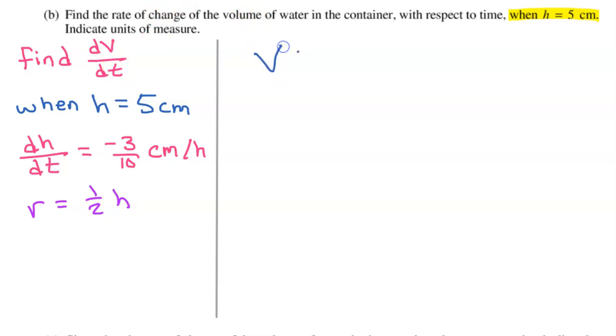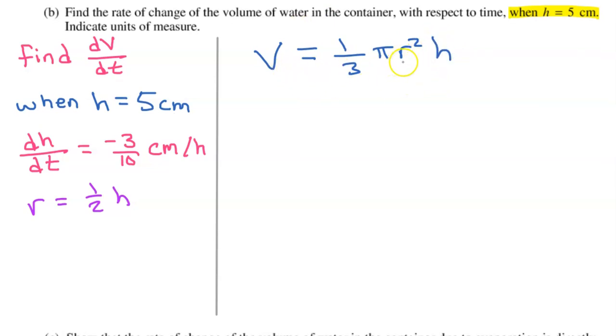So we definitely need to start out with the relationship for volume, which we were told is one-third pi r squared h. This formula is written in terms of two variables, r and h. It would be better if we could get this down to one variable. And I see that we have a value for h, and we have dh/dt. So it sounds like h is very popular. So if we could somehow replace this r with an h, that would be an upgrade. And we have the relationship that we found in part A: r is one-half of h. So let's make that substitution right now.